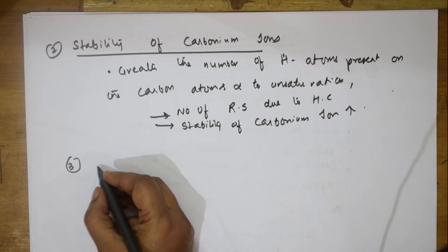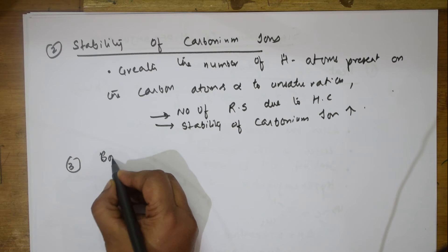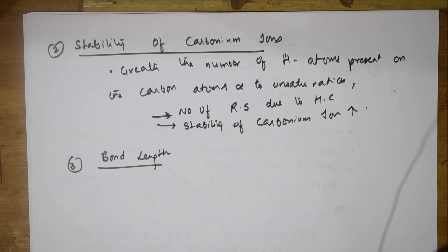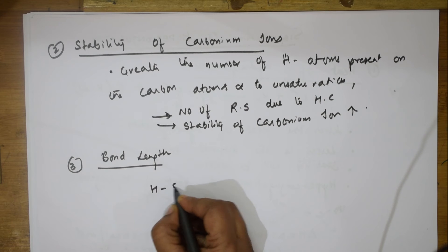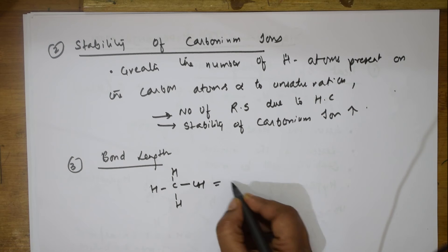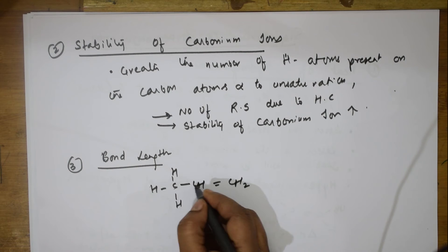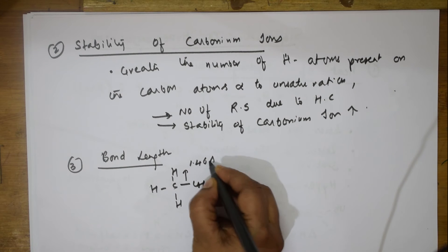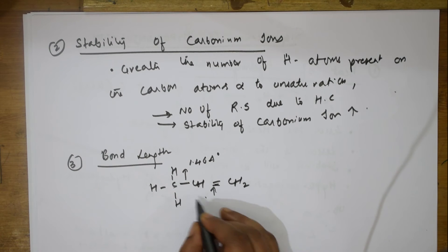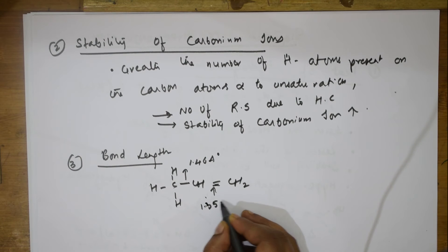The third application of hyperconjugation is in terms of bond length. Hyperconjugation, like conjugation and resonance, also affects bond length. For example, taking CH2=CH2, the C–C bond length is 1.46 angstroms and the C=C bond length is 1.353 angstroms.